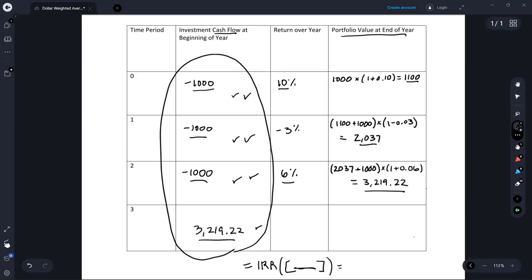When you do that, you're going to find that the IRR of this pattern of cash flows is 3.57%. And that is the dollar-weighted average return.